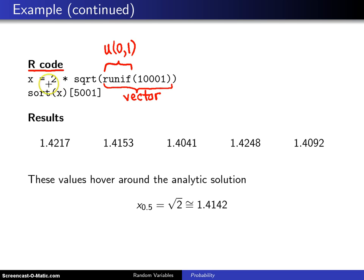The second line of code here starts out by sorting those 10,001 values, and then you pick off what is known as the sample median, which is the 5,001st element, and that right there will be a Monte Carlo estimate of the population median.